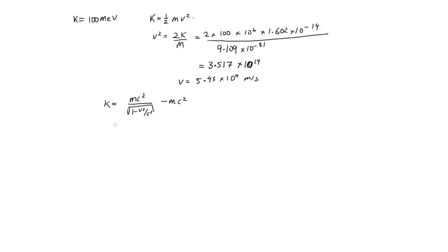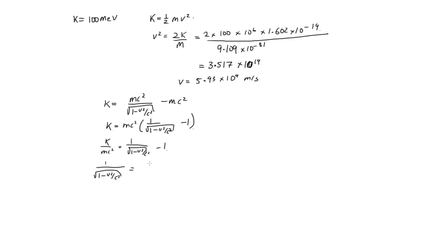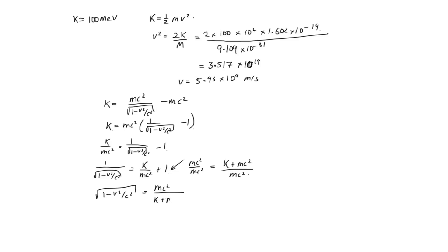We need to use this equation and solve for v. We can write: mc squared times (1 over the square root of 1 minus v squared over c squared, minus 1) equals K. So K over mc squared equals 1 over the square root of 1 minus v squared over c squared, minus 1. Therefore, 1 over the square root of 1 minus v squared over c squared equals K over mc squared plus 1.